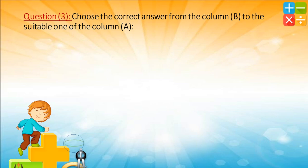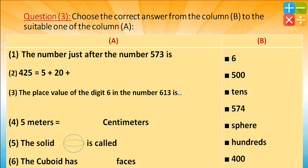Question number 3: match column B to the suitable one in column A. The number just after 573 — is it 6, 500, 10, 574, sphere, 100, or 400? Choose one. The answer is 574. Excellent!